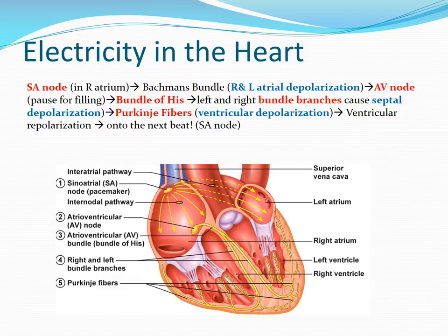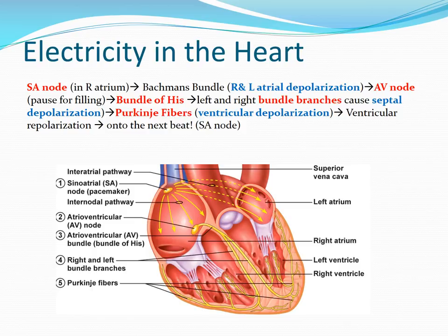The AV node also has automaticity — these are pacemaking cells — but we do not really want our AV node to be a pacemaker. Think of it as a backup pacemaker. In a normal heart, the AV node is very compliant; it waits for the signal and then sends it further along. As electricity hits the AV node, there's a tiny little pause to allow the ventricles to fill up. Once that pause has happened, the electricity is allowed to move down through the right and left bundle branches and then scoop around the ventricles up through the Purkinje fibers.